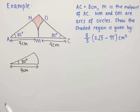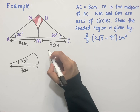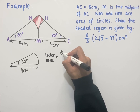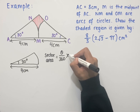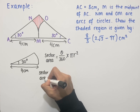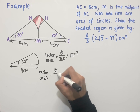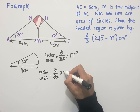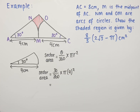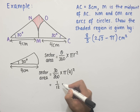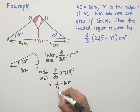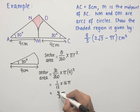Looking at one sector, we have an angle of 30 degrees and a radius of 4 centimetres. Using the formula for sector area with angle in degrees: sector area equals theta over 360 multiplied by pi r squared. Substituting theta equals 30 degrees and r equals 4 centimetres gives us 30 over 360 multiplied by pi times 4 squared. Since 30 over 360 equals 1 over 12 and 4 squared equals 16, we multiply to get 16 pi over 12, which simplifies to 4 over 3 pi.